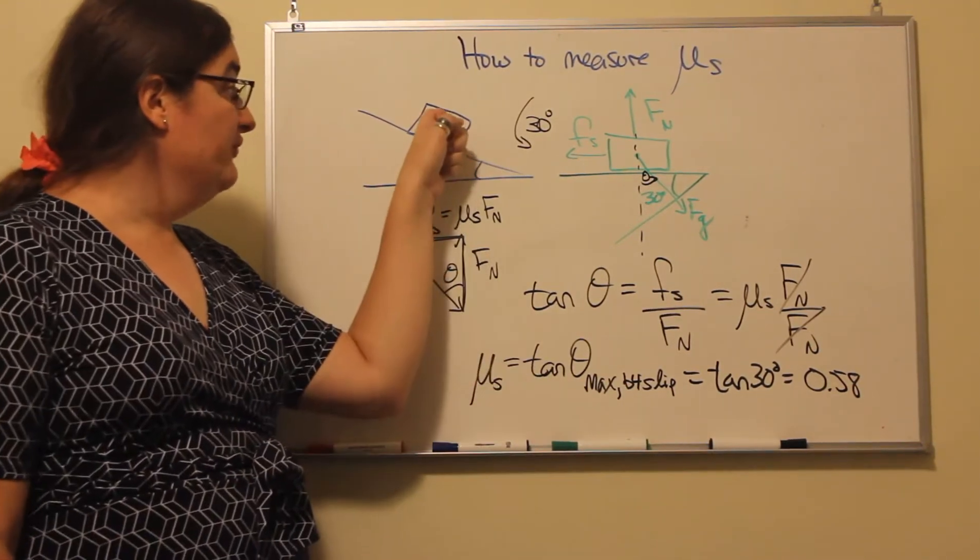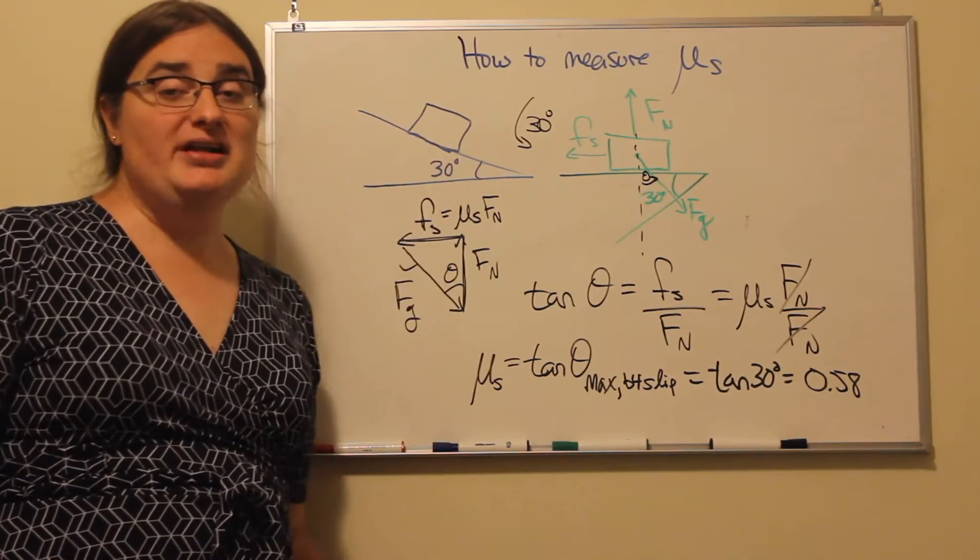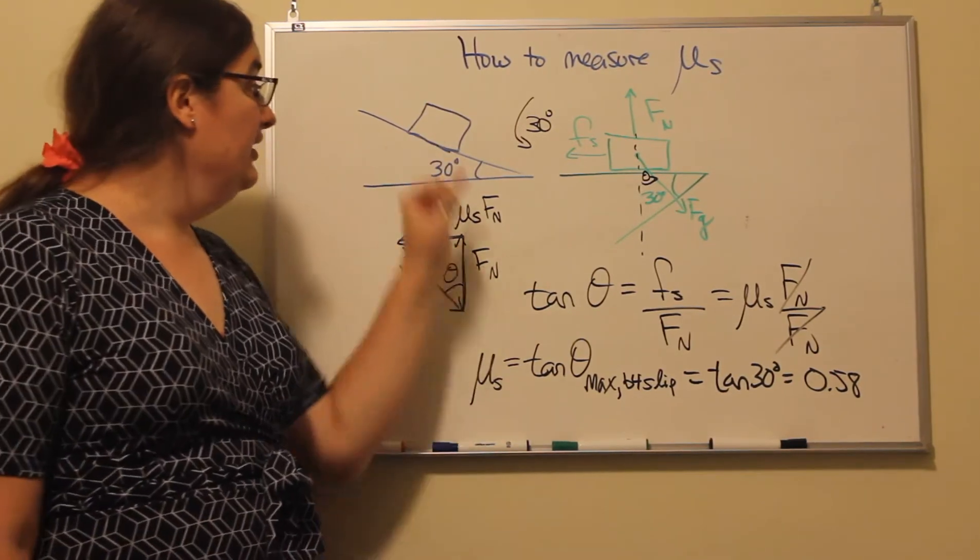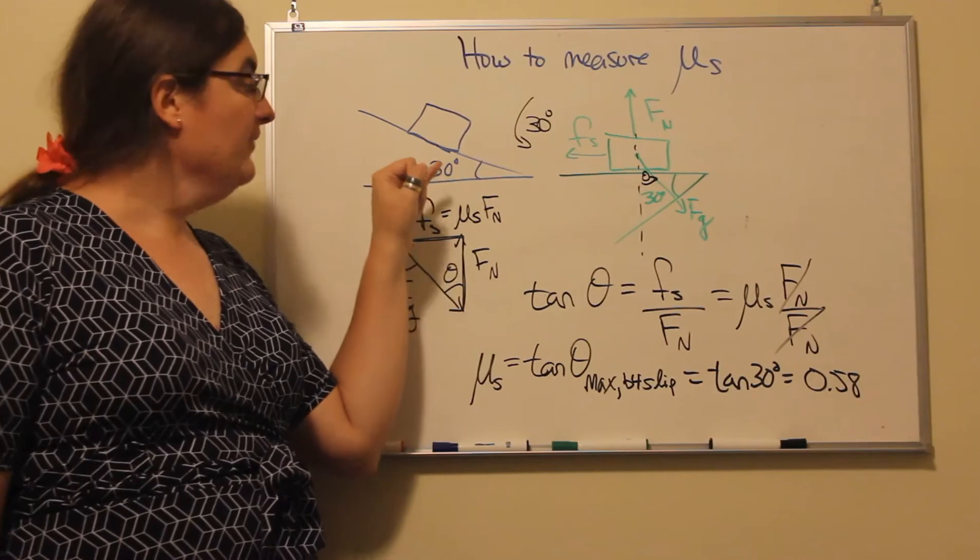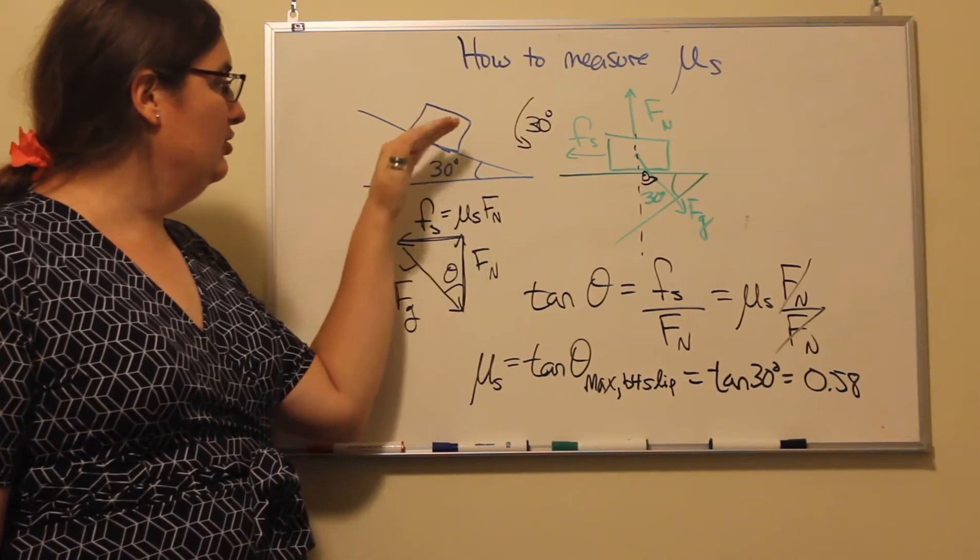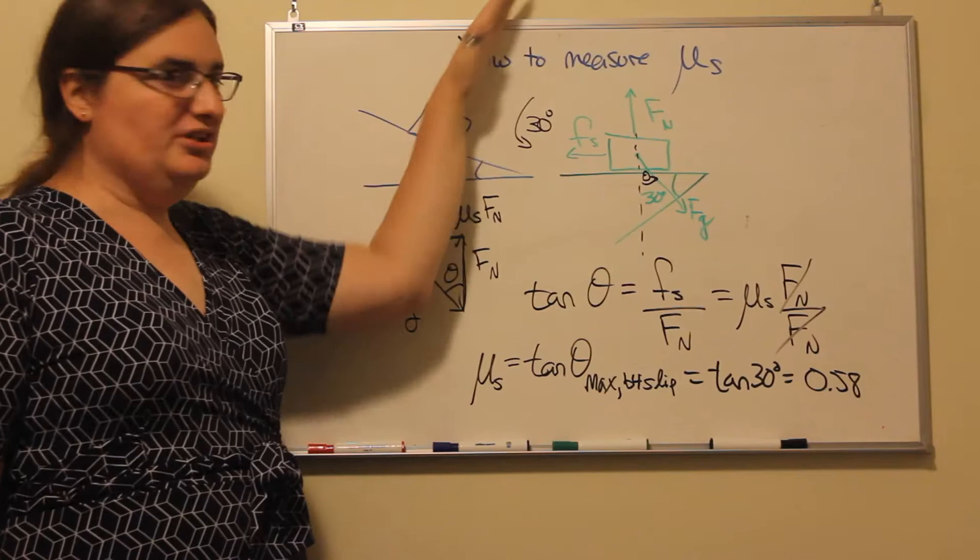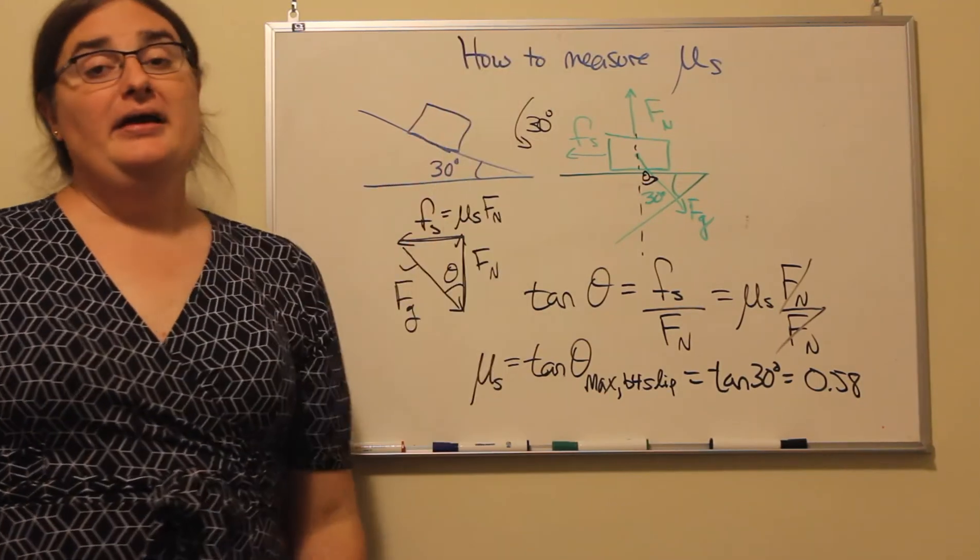There's of course the weight pulling straight down towards the center of earth. There's the normal force, and because the surface is at this angle, the normal force is going to be acting up and to the right.